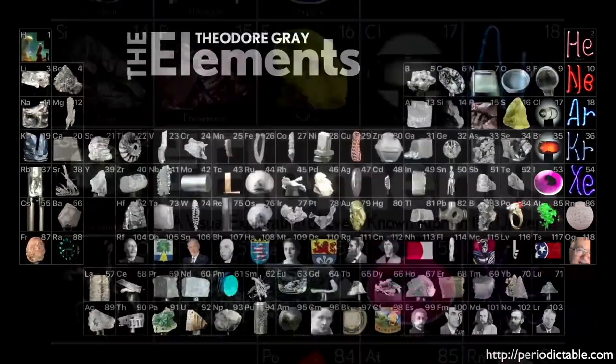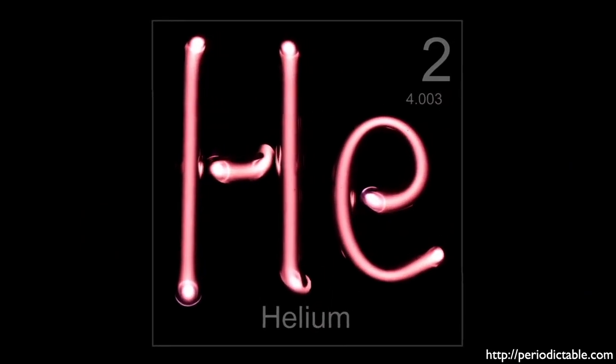Helium is the second element in the periodic table. Its atomic number is two because that's how many protons are in its nucleus, and that is what distinguishes it as a unique element.